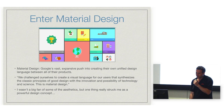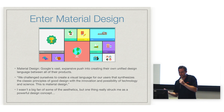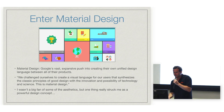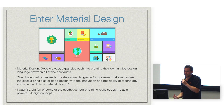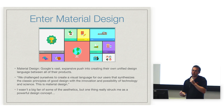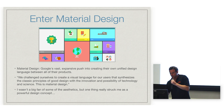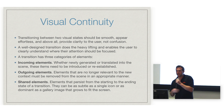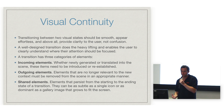So then: Material Design. Material Design — if you guys don't know or haven't checked it out yet — is Google's vast, expansive effort to create their own unified design language across all of their products. As they said: 'We challenged ourselves to create a visual language for our users that synthesizes the classic principles of good design with the innovation and possibility of technology and science.' Checking it out initially, I wasn't a huge fan of some of the aesthetics, but one thing that really struck me was this concept they had of visual continuity. Transitioning between two visual states should be smooth, appear effortless, and above all provide clarity to the user, not confusion.